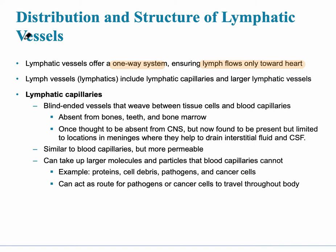The lymph vessels include, first of all, lymphatic capillaries, which have the smallest diameter. Those lead into progressively larger vessels with a larger diameter. These lymphatic capillaries are very special — they are different from capillaries in the cardiovascular system. They have one specific characteristic referred to as blind-end vessels.